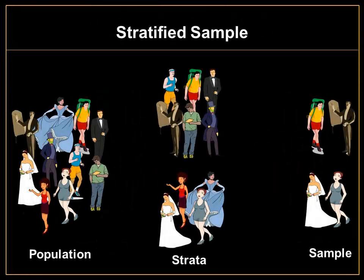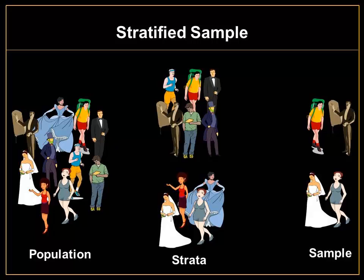Next, we have a stratified sample. With a stratified sample, the population is divided into strata, or groups, and the individuals within each group are similar. For example, if you wanted to analyze men versus women, you would divide the entire population into two groups — men and women — and then you randomly select subjects from each group.